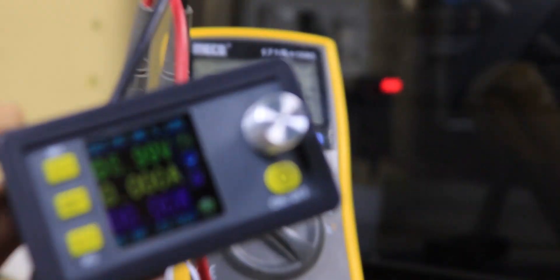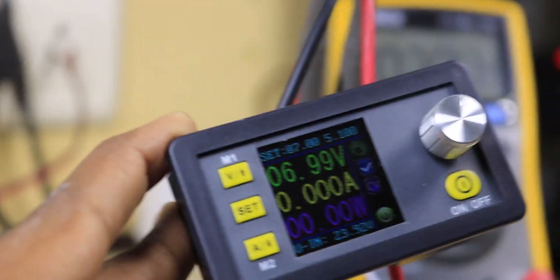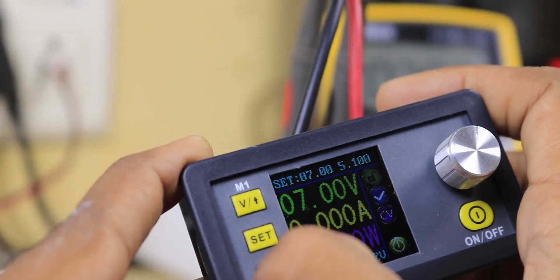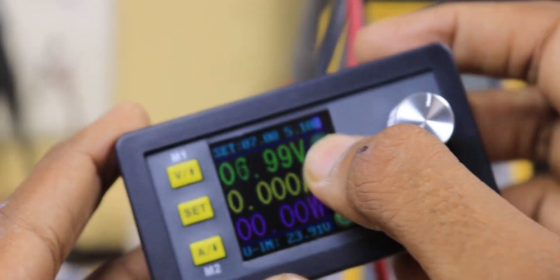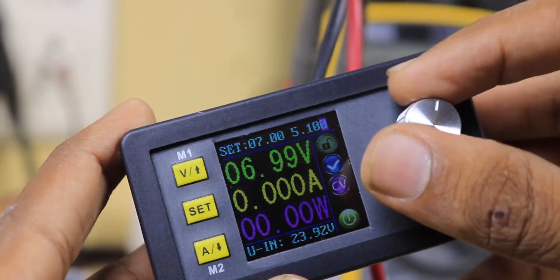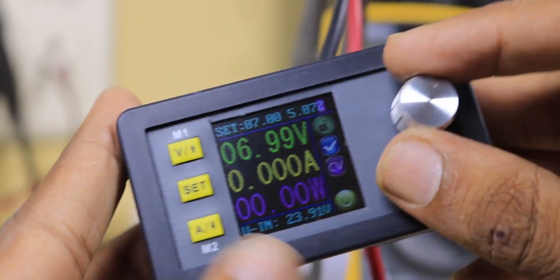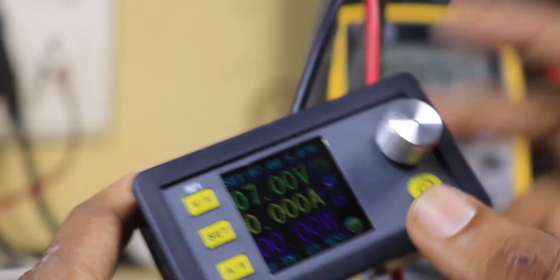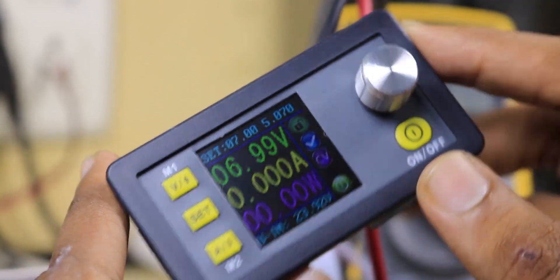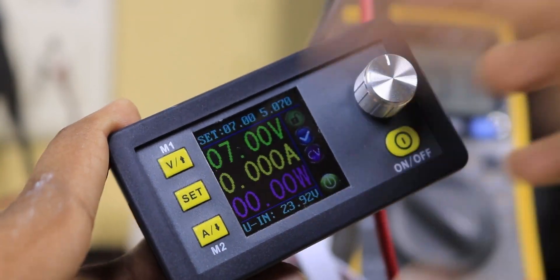You can even set the maximum output current by going to this menu. Right now it's set to 5.1 and you can change it to anything you want. If you want to change it more vigorously, you can go deeper in the menu.